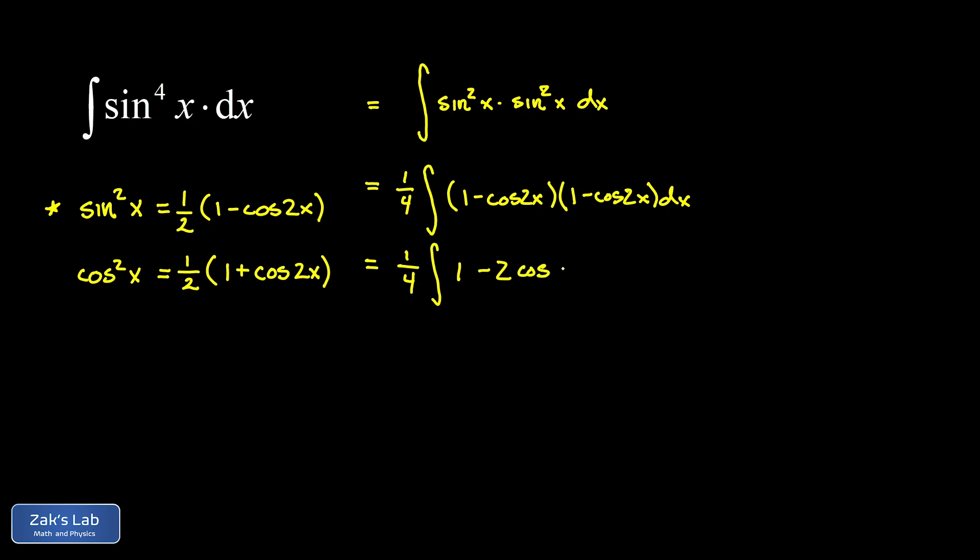Then we have a minus cosine 2x and then another minus cosine 2x, so we get minus 2 cosine 2x, and then finally a plus cosine squared 2x. So that cosine squared term is problematic.